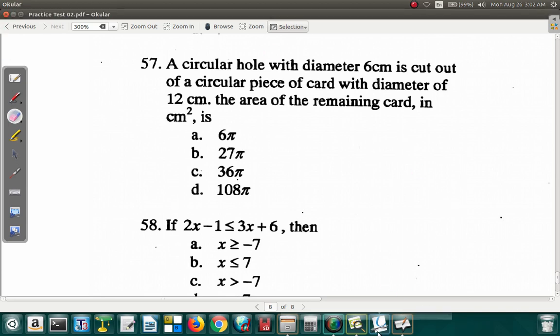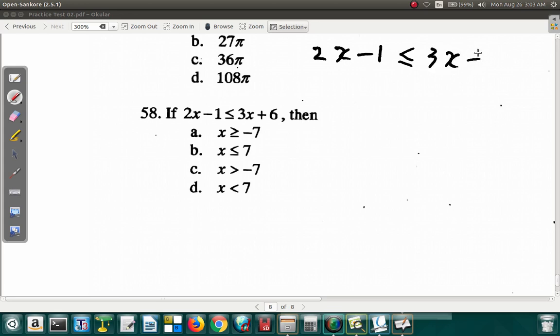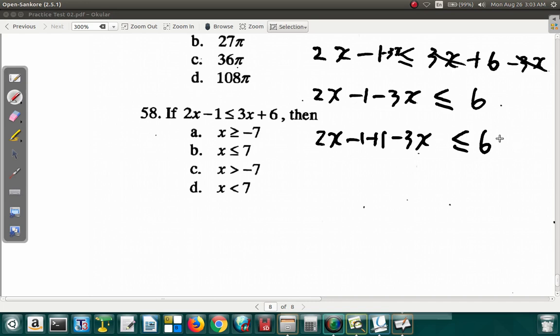What about 58? Question 58. If 2x minus 1 is less than or equal to 3x plus 6, then x is. 2x minus 1 is less than or equal to 3x plus 6. Let's put like terms together. Subtract 3x from both sides. So you'll have 2x minus 1 minus 3x is less than or equal to 3x minus 3x. This is gone. It's 6. Add 1 to both sides. So 2x minus 1 minus 3x is less than or equal to 6. You add 1. Negative 1 plus 1 is 0. So it's 2x minus 3x is less than or equal to 6 plus 1, which is 7.